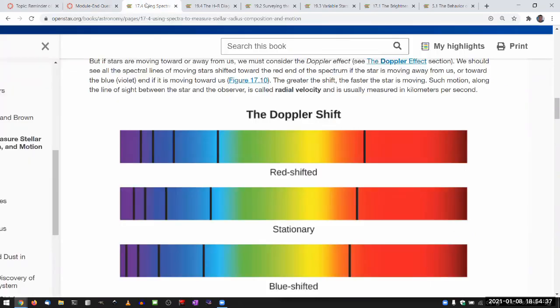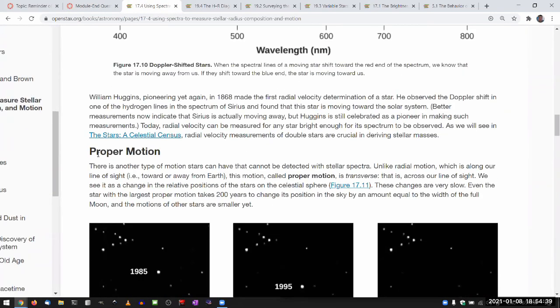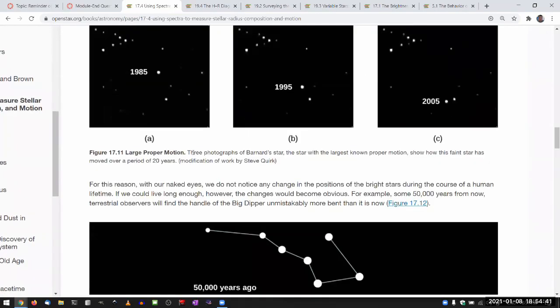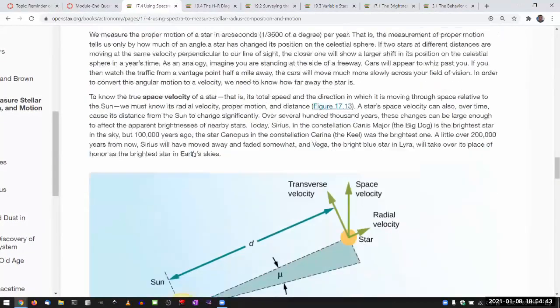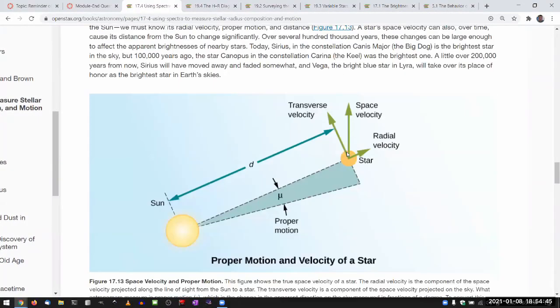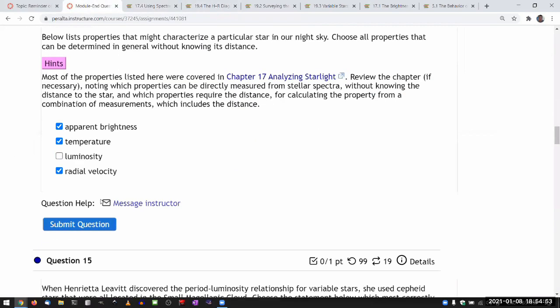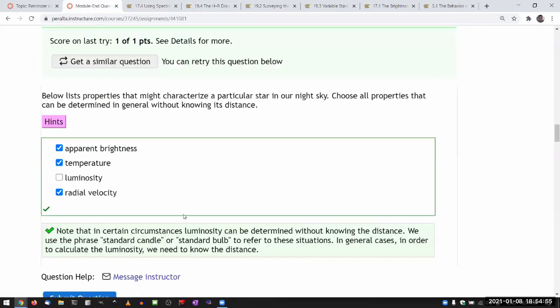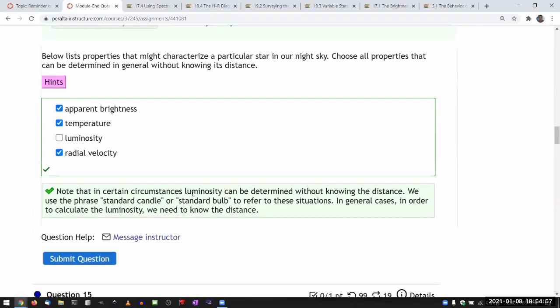Now, if you want... I think here they do mention proper motion. So if you want to figure out how the star is moving transverse-wise, you actually need to know the distance. But radial velocity, you don't need the distance. So yeah, not uncertain. Yeah, right.